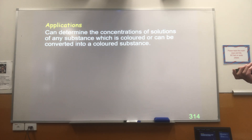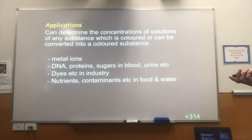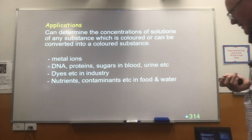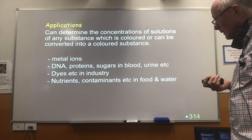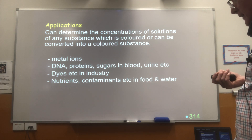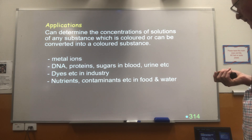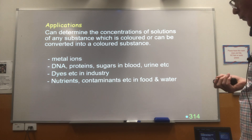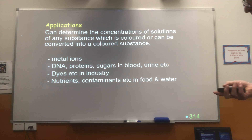Anything which we can turn into a coloured solution, we can measure the concentration of — it's got to be something coloured and able to be made into a solution. There's a huge range of different analyses that can be done. UV-Vis is so widely used in industrial chemistry and medical analysis: metal ions are the really simple things we can do, whole lots of organic compounds can be measured either by their absorbance in the UV range or by reacting with something to turn them into a coloured solution, as well as dyes and lots of things in food.